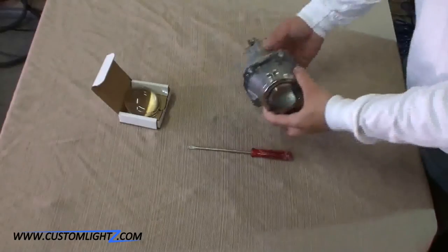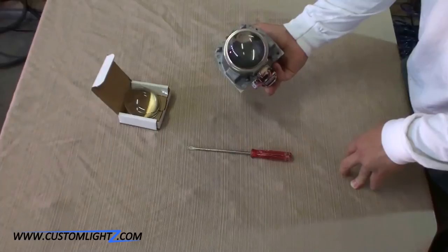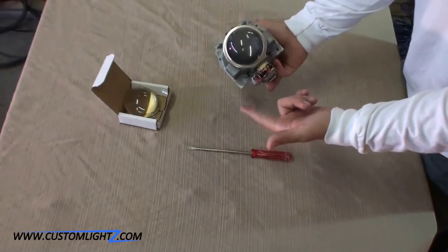Alright, so here we've got the Acura TL Bi-Xenon projector. In order to do a color mod to this particular projector, we need to do two things. One, swap the lens out. Two, modify the shield.